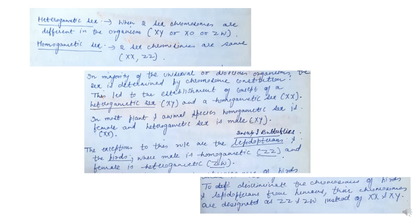There are some exceptions to this rule. Lepidopterans, which include insects and butterflies, and birds are exceptions where male is homogametic. In these cases, males have ZZ chromosomes and are homogametic, while females are heterogametic with ZW chromosomes.